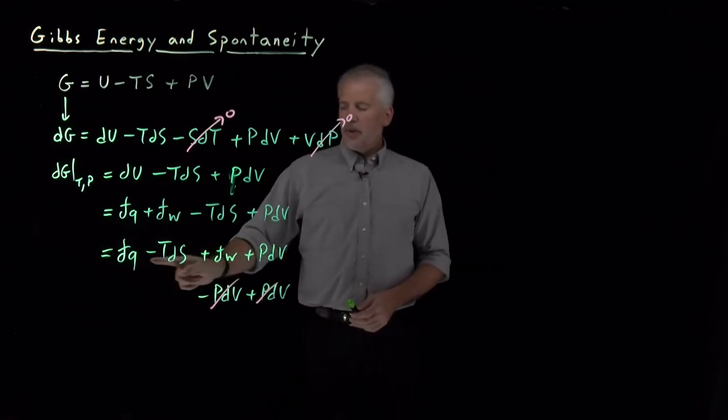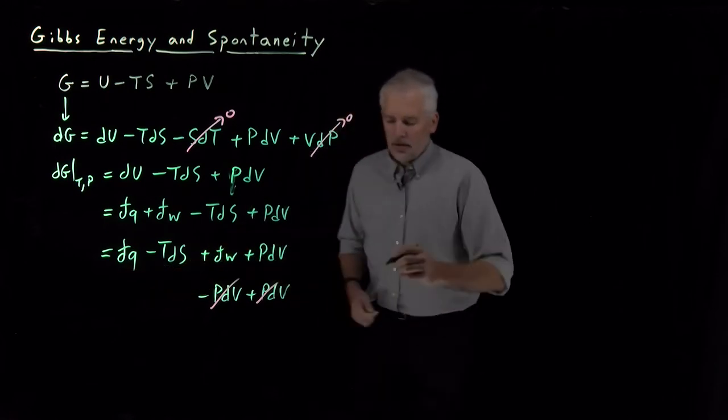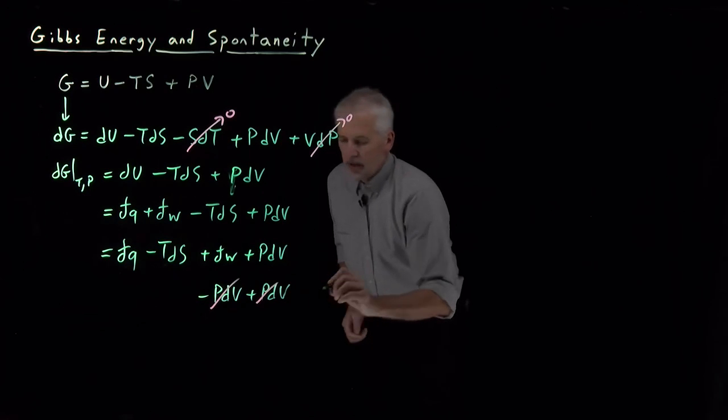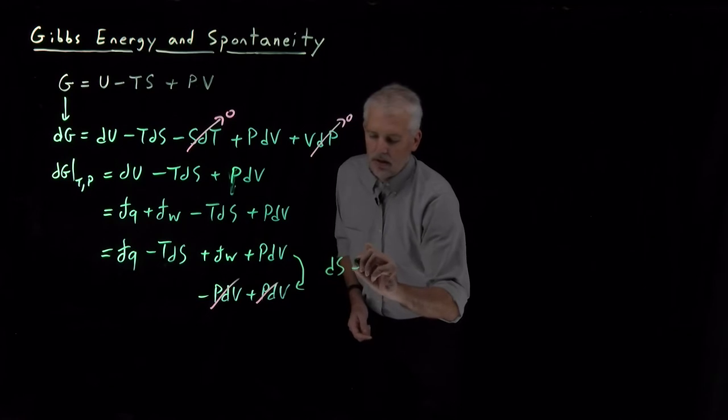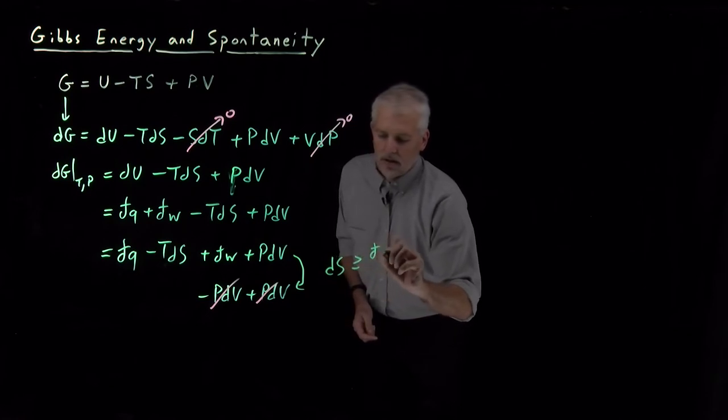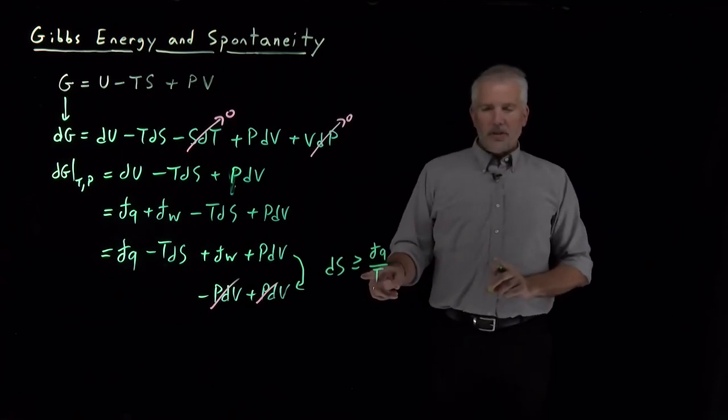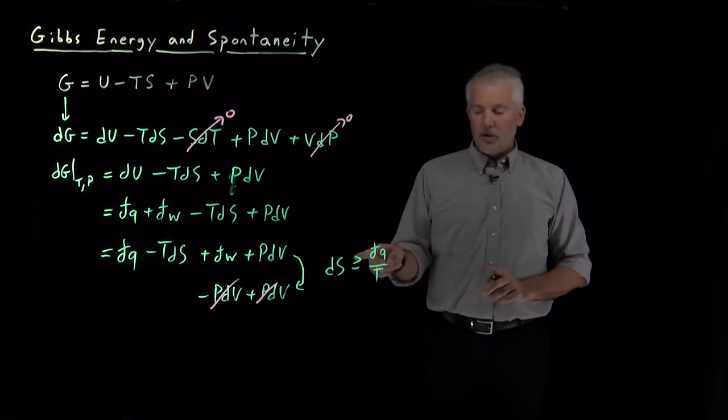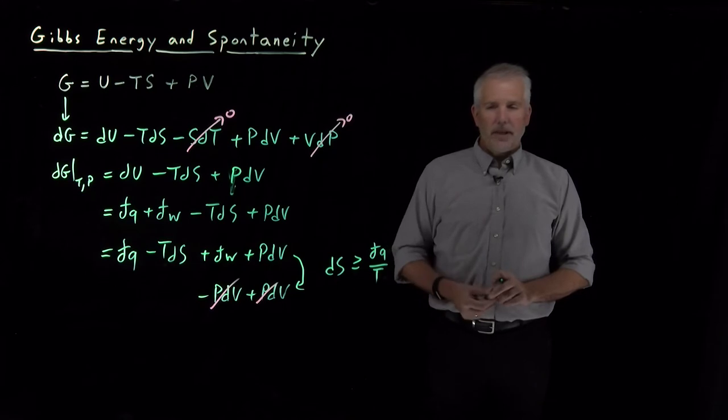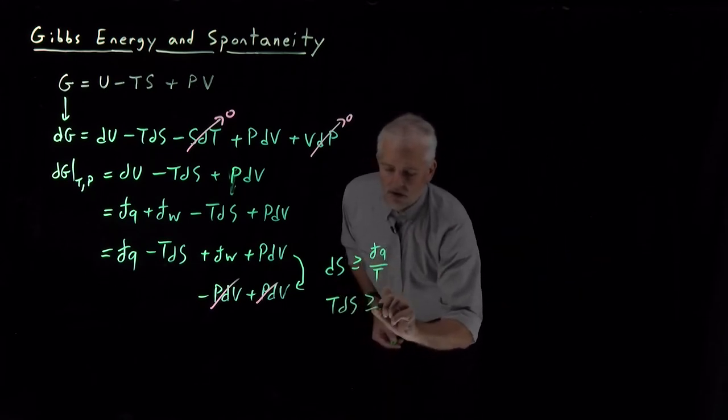The relationship between heat and T times dS is not quite as simple. We know from the Clausius theorem that depending on whether the process is reversible or irreversible, dS will be larger than or equal to dq/T. Rearranging that slightly, we know that TdS is greater than or equal to dq.